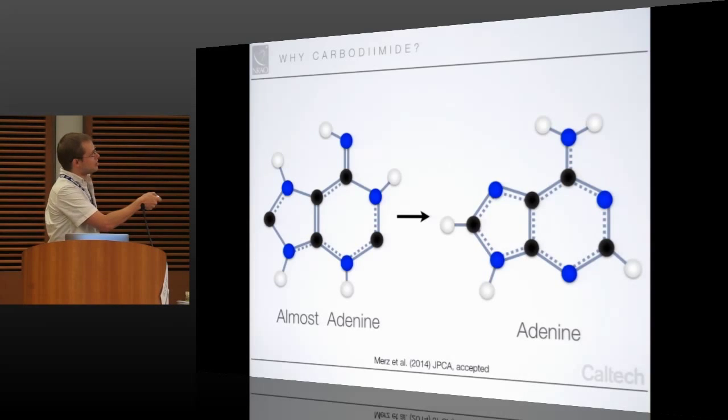This conversion happens barrierlessly in the gas phase in space, according to theory. That's pretty shocking because almost all of the complex molecules have to be formed in these ices normally. This can happen in the gas phase. And if you look at the subunits of almost adenine here, you've got this backbone, C3NH,